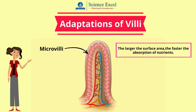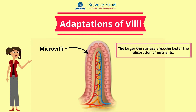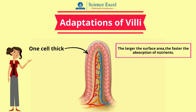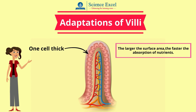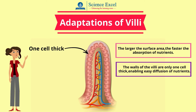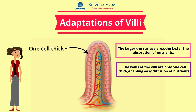The larger the surface area, the faster nutrients are absorbed. Villi have walls only one cell thick so that the digested nutrients can easily diffuse through the walls to reach the blood.